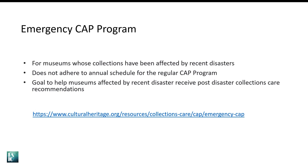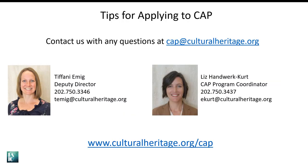I also wanted to briefly discuss the emergency CAP program. We know that disasters can happen at any time, whether that is hurricanes, floods, burst pipes, or other emergencies that can devastate collections. FAIC often has funding to support emergency CAP assessments to assist museums whose collections have been affected by a recent disaster. The emergency CAP program functions similarly to the regular CAP assessments, but is more flexible in that it does not adhere to the annual schedule. The goal is to help museums affected by a recent disaster receive post-disaster collections care recommendations from conservation and building professionals. Just as with the regular CAP program, the emergency CAP provides partial funding towards a general conservation assessment, with prioritized recommendations to improve collections care. Please check out our website for more information. Every museum is unique and we'd be happy to talk about your individual questions and concerns anytime.